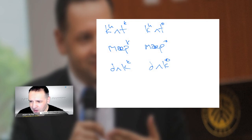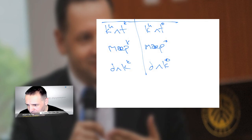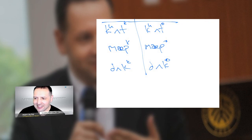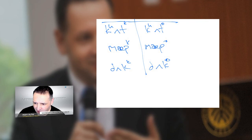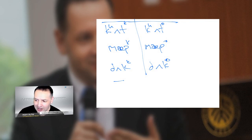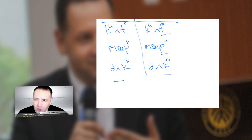Listen to the difference — this is with the final plosive released versus not released. Cut / cut. Map / map. Duck / duck. Going down the first column: cut, map, duck. Now the second column: cut, map, duck. Can you hear the difference? This one is caught in my throat — it's got a glottal stop that comes over it and makes it cut off at the end.